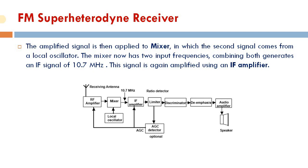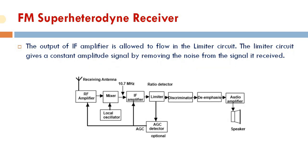The amplified signal is then applied to the mixer, in which the second signal comes from a local oscillator. The mixer now has two input frequencies, and combining both generates an IF signal of 10.7 megahertz.